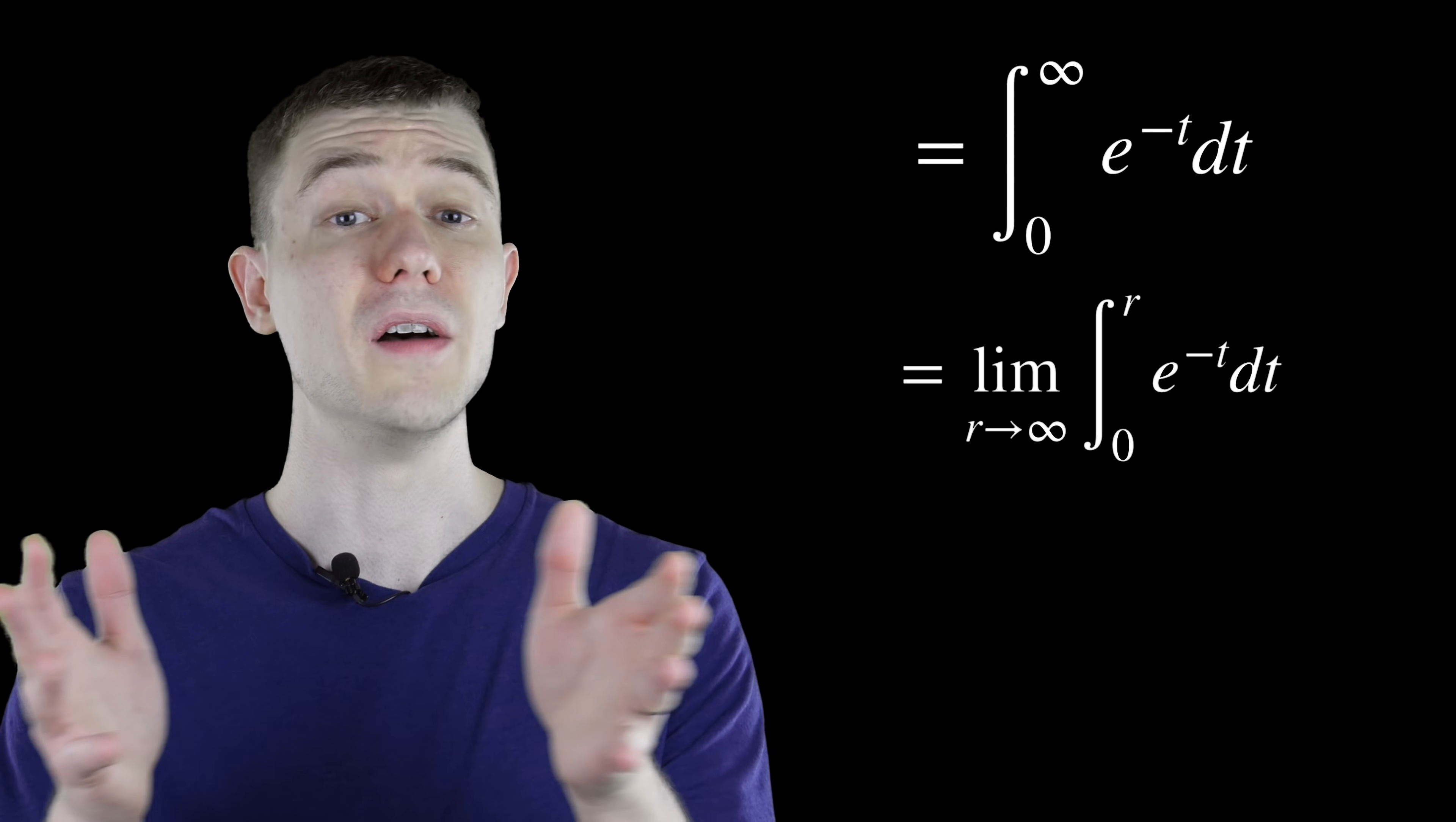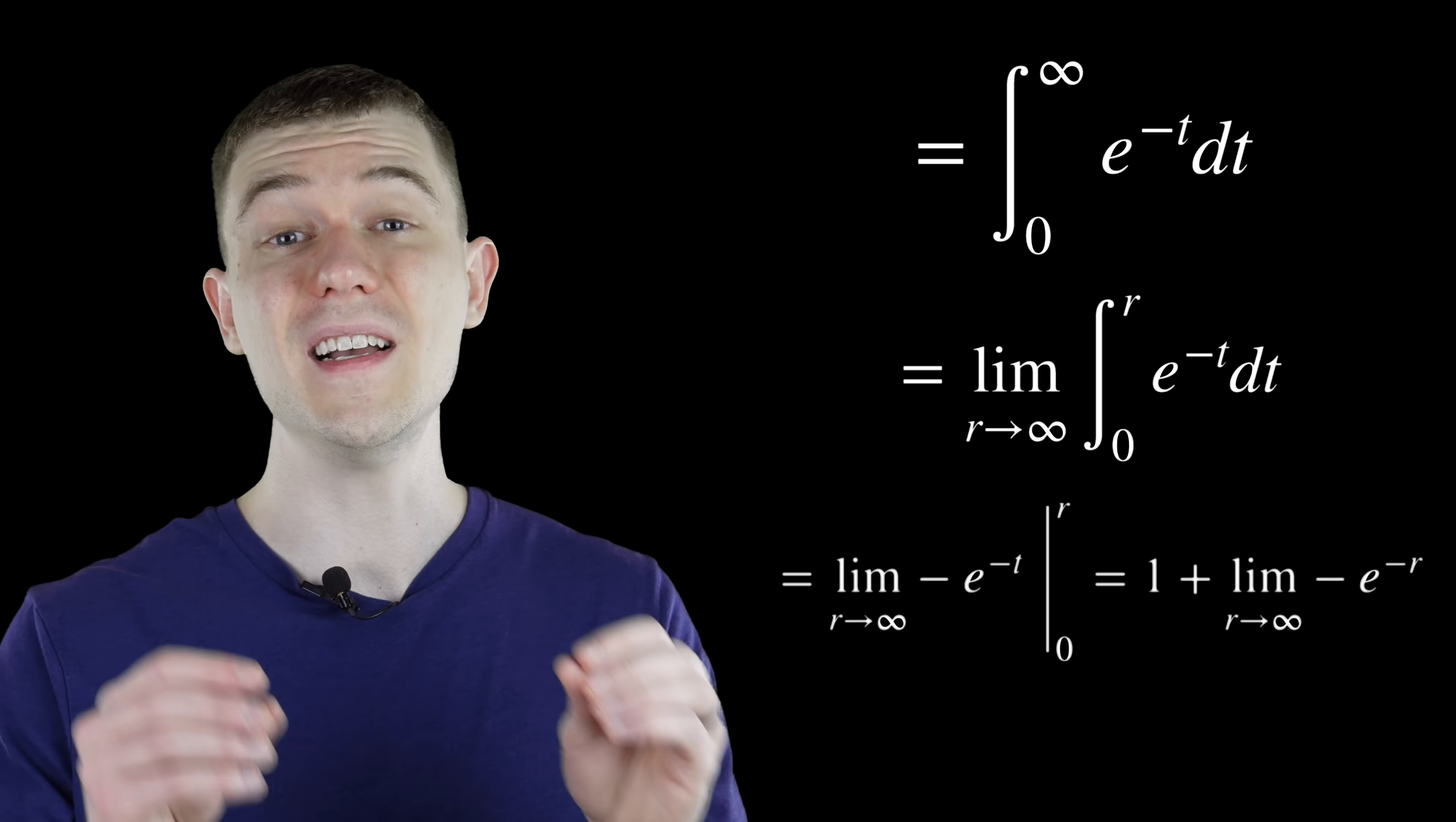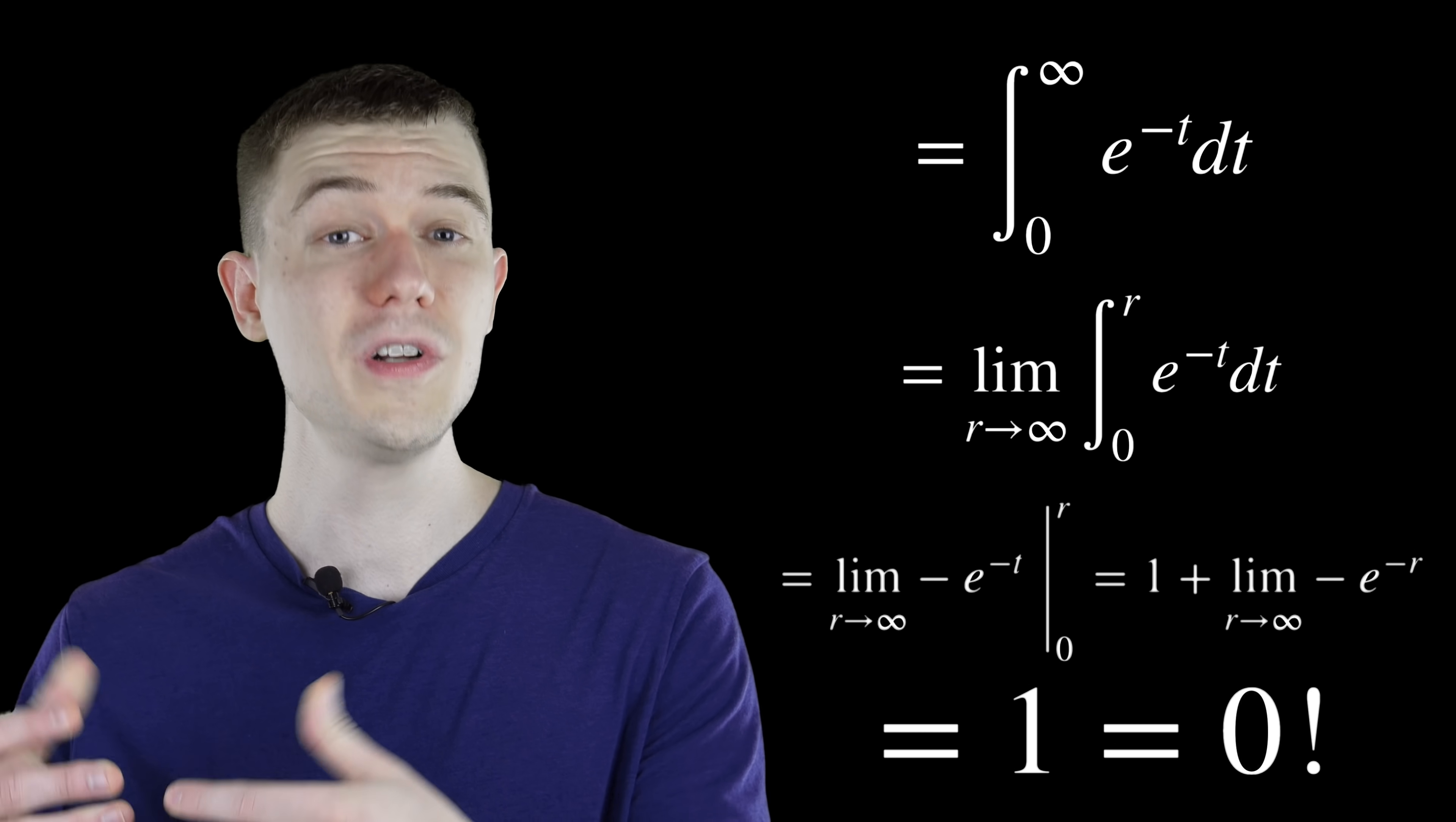Take the antiderivative of the exponential function. Maybe you want to rewrite those bounds in terms of limits, so we can actually compute this improper integral. And we'll see, after applying the fundamental theorem of calculus, that this integral does indeed equal 1, which is 0 factorial. That's a great place to start.